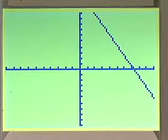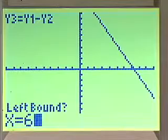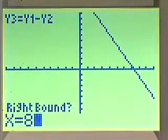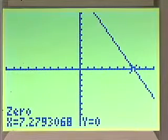Now we'll graph. We'll find the zero: second calc zero, where the left bound looks like it's about maybe 6, and the right bound looks like it's maybe 8. And then we'll make a guess. So our solution here is that from the point 7.28, and we want to know where that's less than 0, which is to the right, our solution would be from 7.28 to infinity.